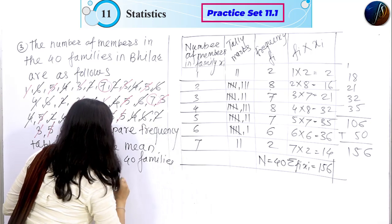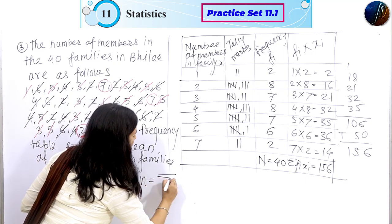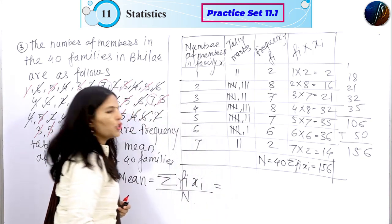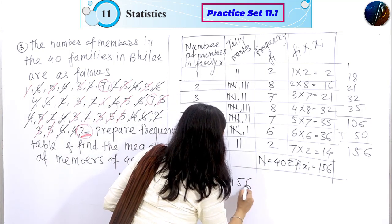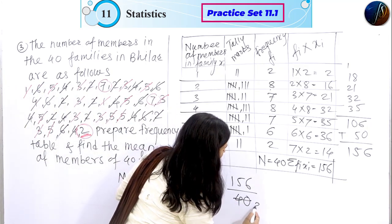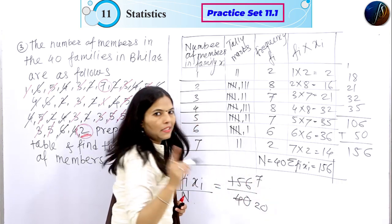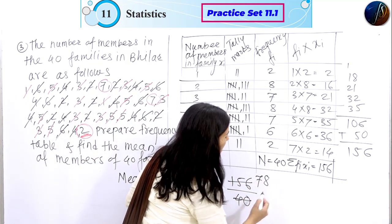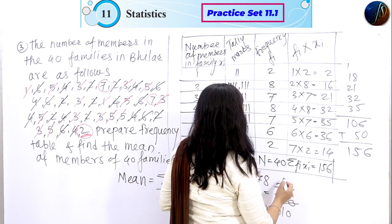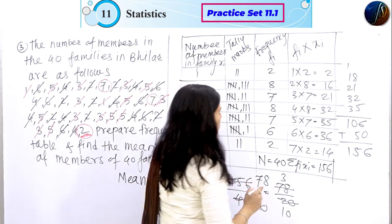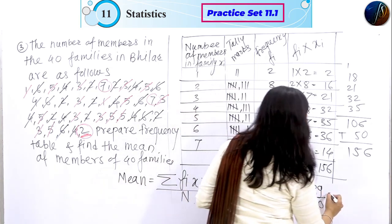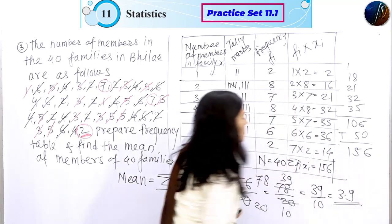What is the formula here? Arithmetic mean is equal to summation of fi × xi divided by N. Summation of fi × xi divided by N — that is 156 divided by 40. We will simplify: 156 divided by 40. We break it down: 156 upon 40 simplifies to 39 upon 10, which gives 3.9. The average mean is 3.9.